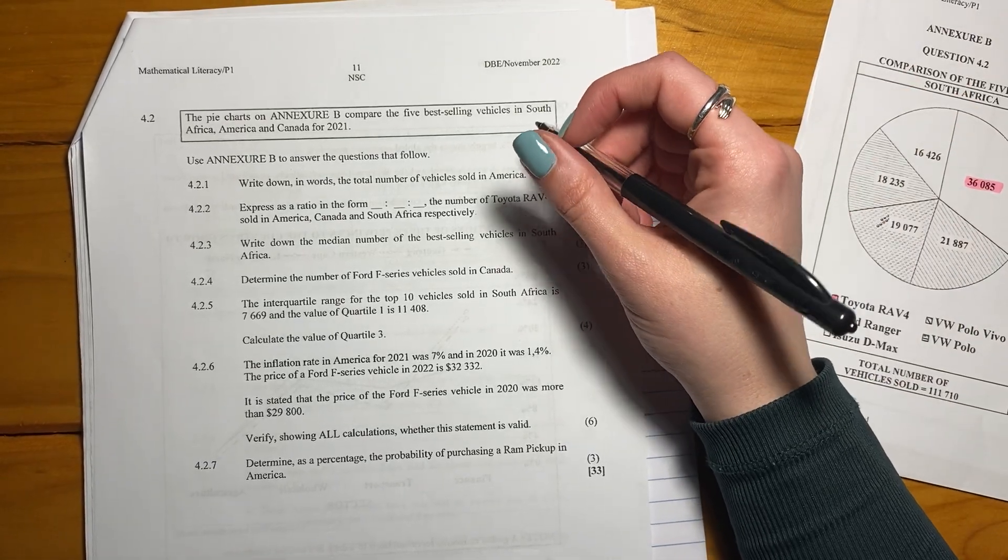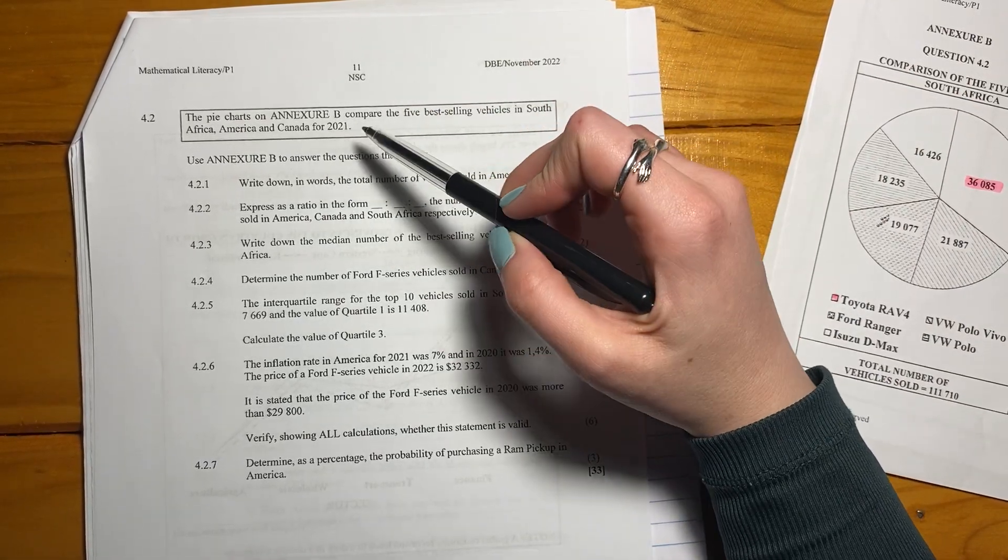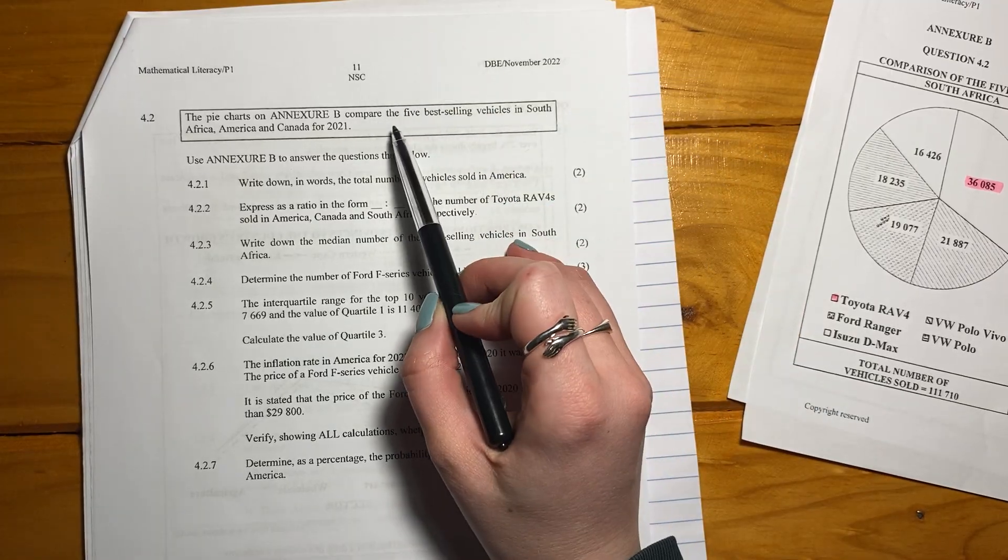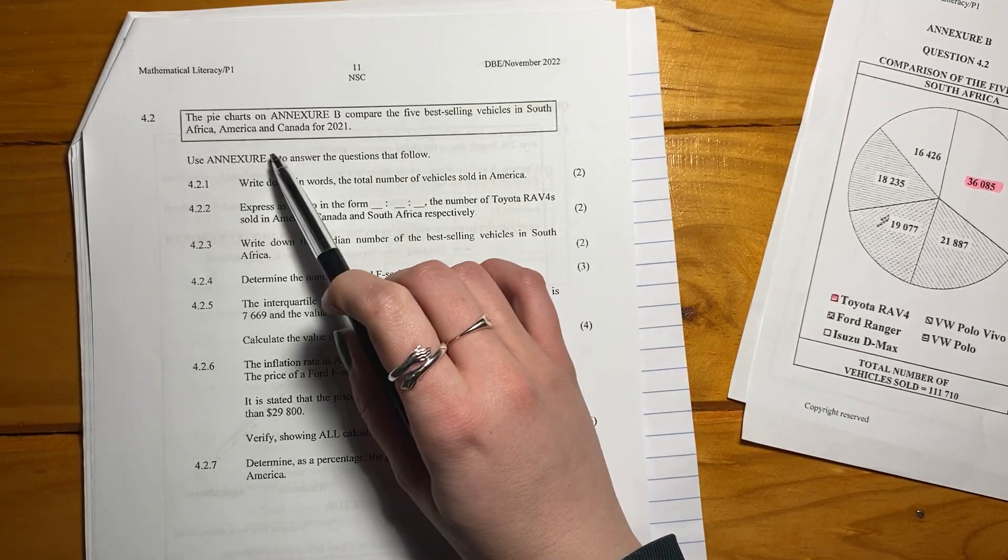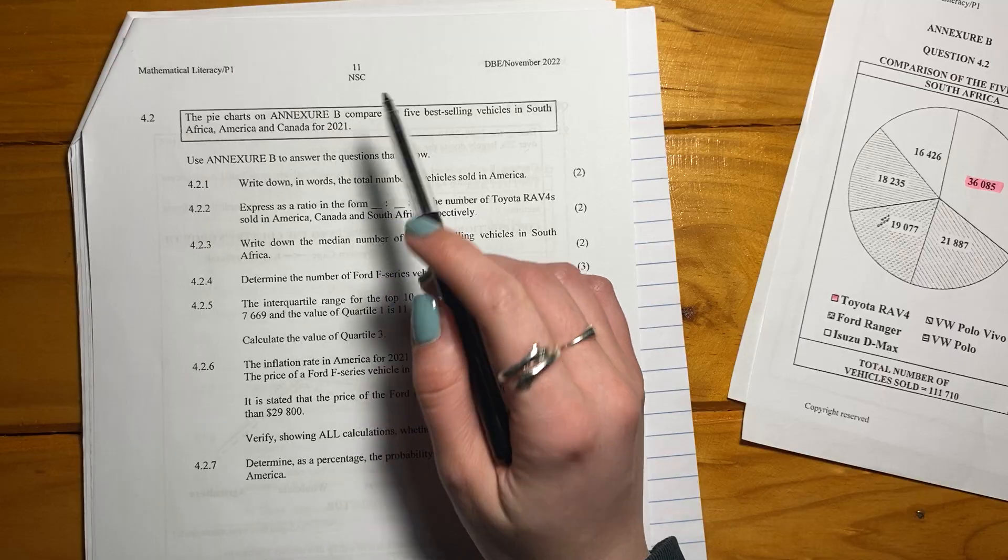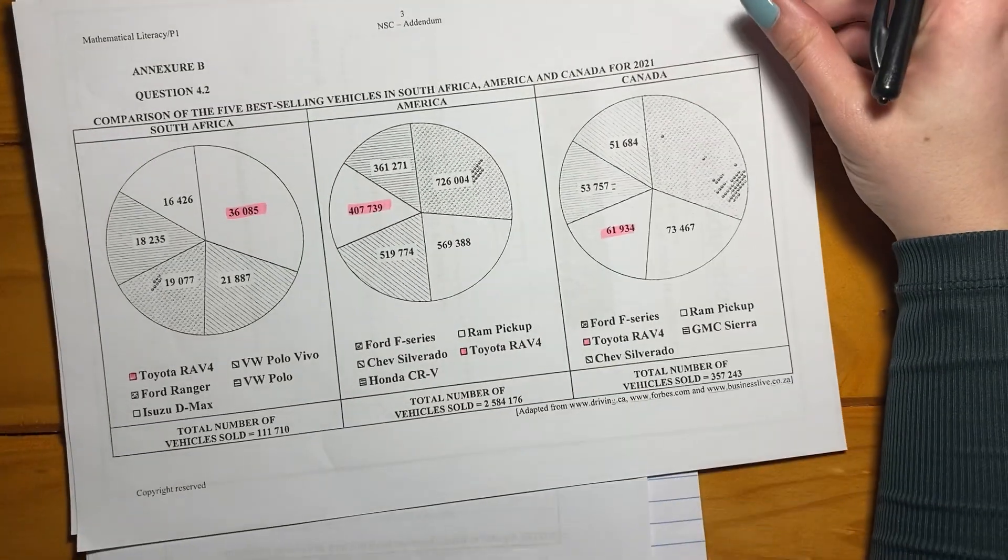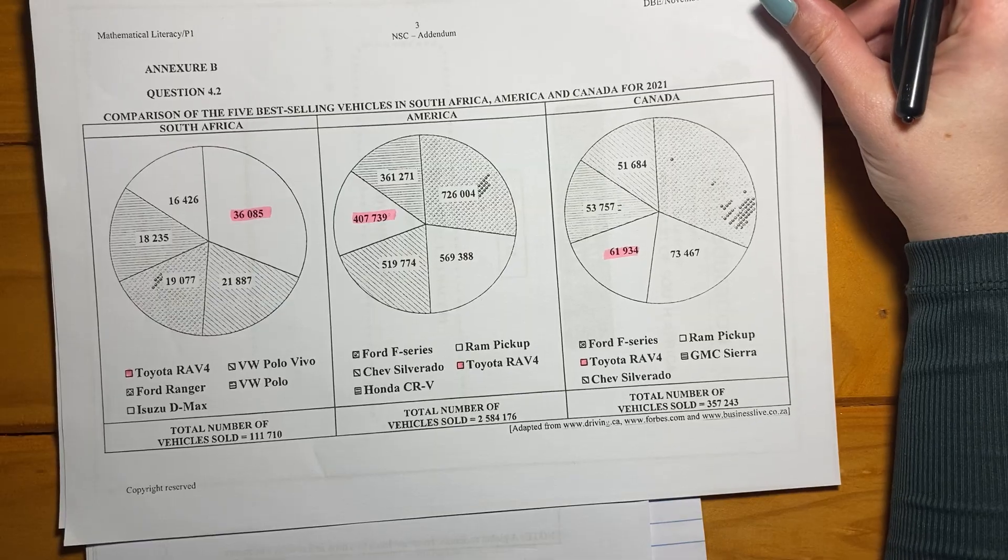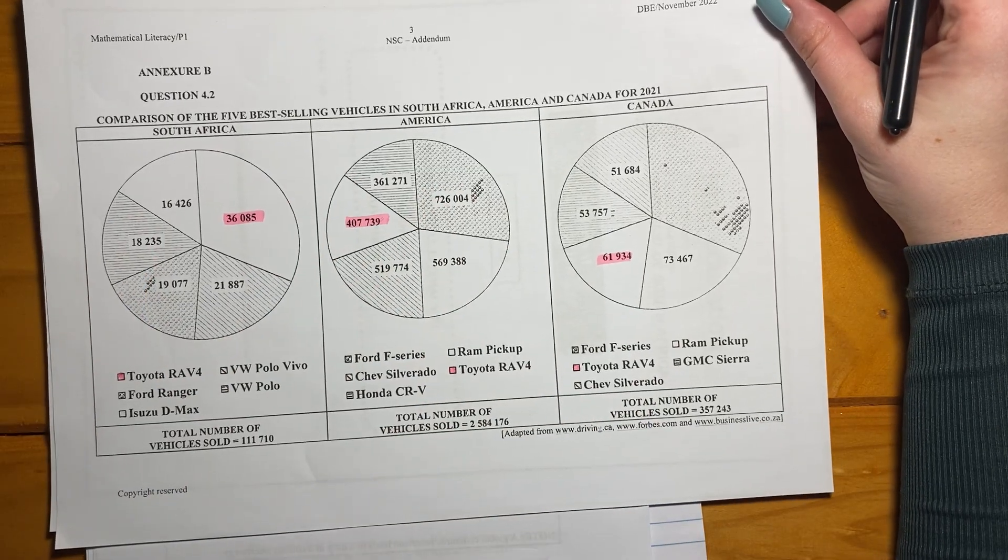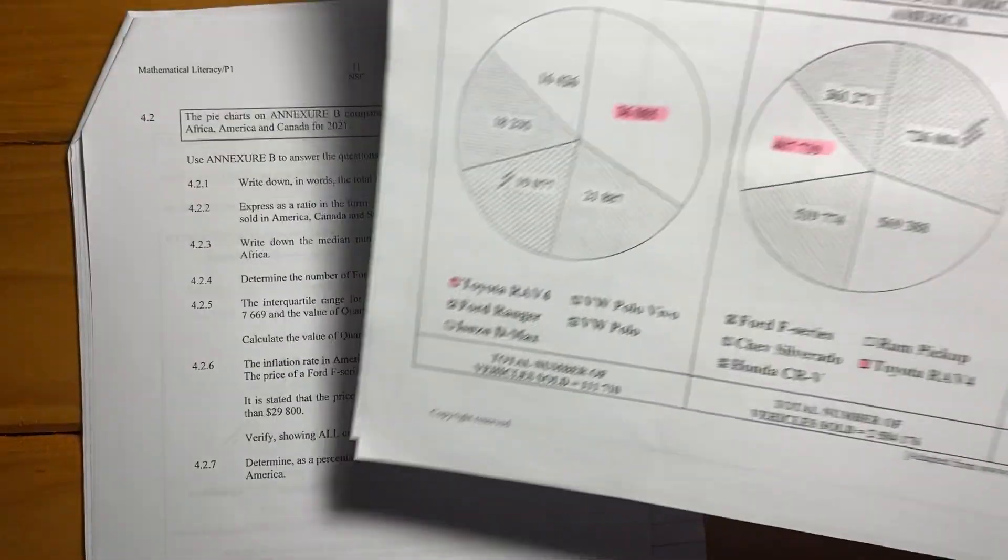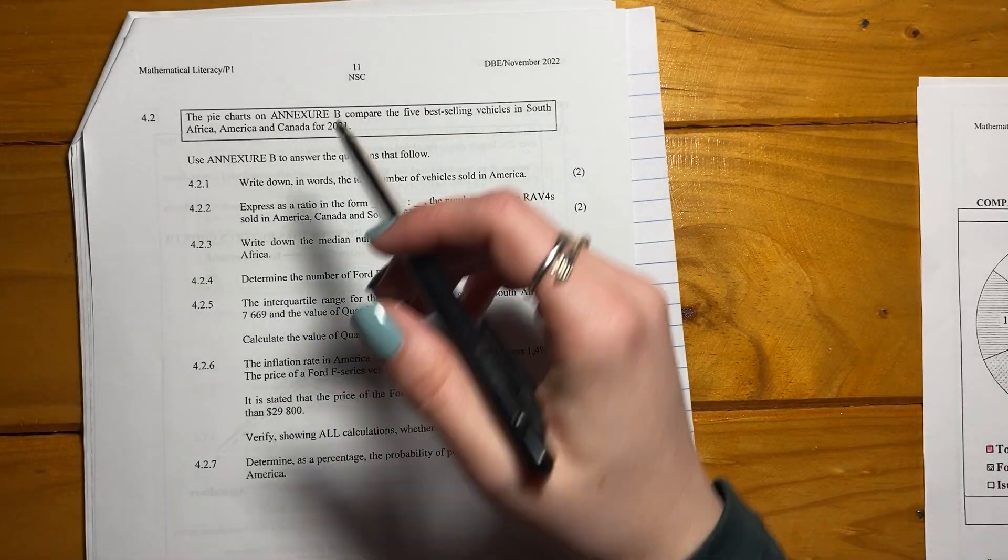Let's move on to question 4.2. The pie charts on Annexure B compare the first best-selling vehicles in South Africa, America and Canada for 2021. Like usual, go find your Annexure and make sure you have it. Your one will be in colour in your exam. I printed mine out in black and white, which made it quite difficult for me.